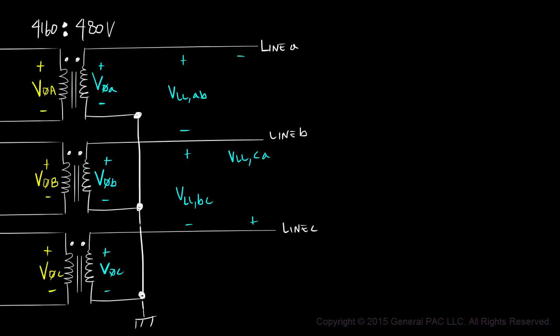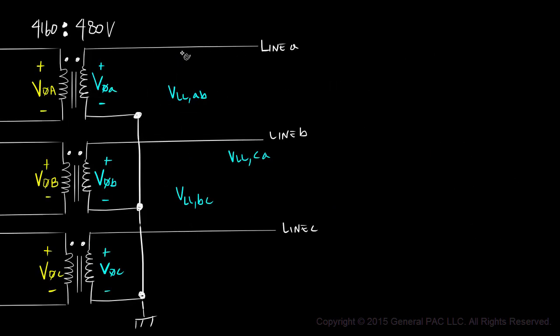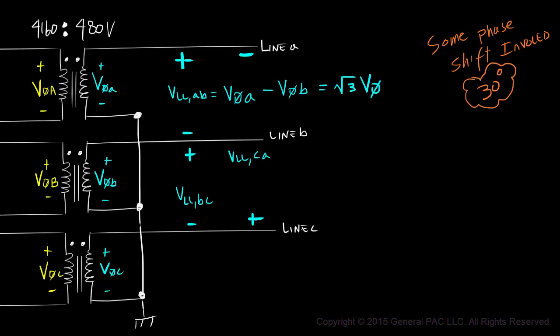On the secondary side where our transformer is connected in Y, we'll have a different relationship between the line-to-line voltage and phase voltage. This relationship is discussed in great detail in a different module, so check out the resources section for more information. The most common line-to-line measurements are across line A and line B, across line B and line C, and across line C and line A. The line-to-line voltage across line A and line B is equal to phase A voltage minus phase B voltage. For a Y-connected transformer, looking at magnitudes alone, we should expect the line-to-line voltage to equal the square root of 3 times the phase voltage. There will also be a 30-degree phase shift between the line-to-line voltage and phase voltage.